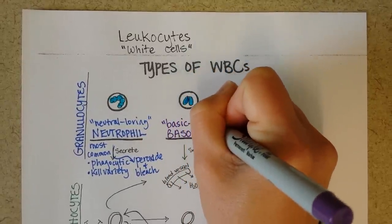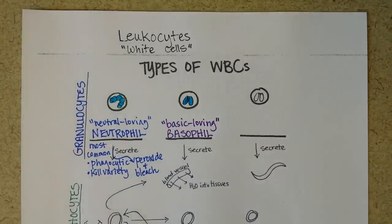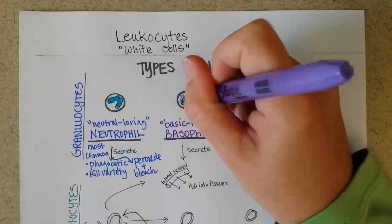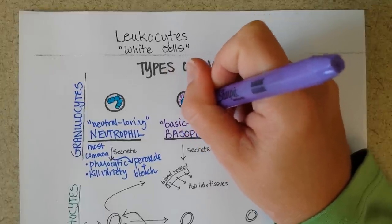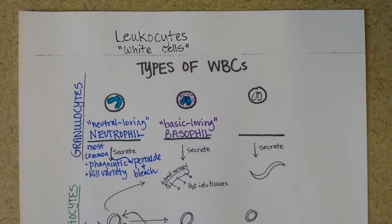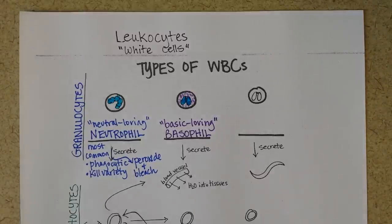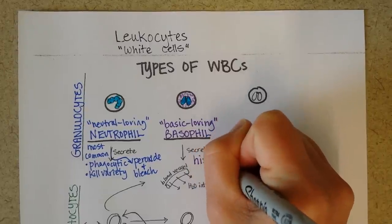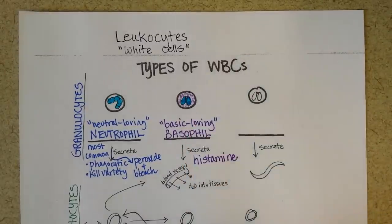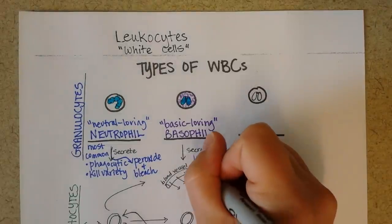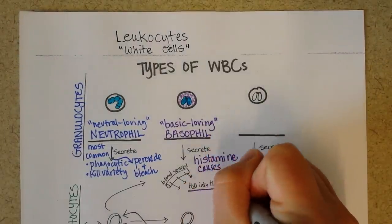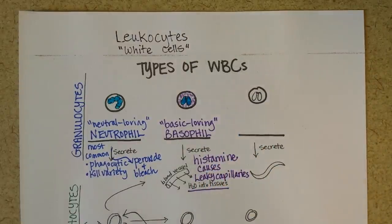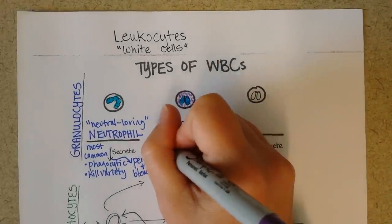When Wright stain is applied, the basophil granules stain purple so intensely that the edges will often look a little bumpy, and you might just see what looks purely purple — all you can see are those purple granules. These granules secrete histamine, which causes leaky capillaries — in other words, inflammation. Basophils are the rarest white blood cells circulating in the blood.